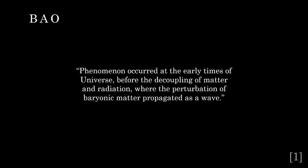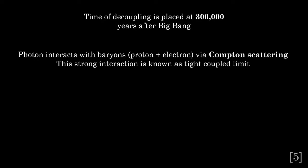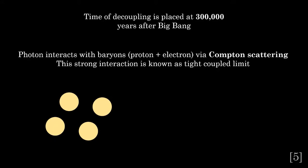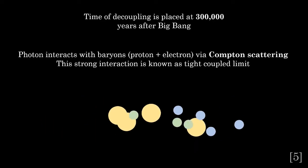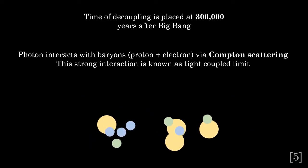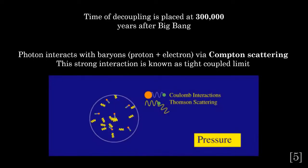Building some foundation on the perturbation, the Baryon Acoustic Oscillation, BAO from now, is a phenomenon that occurred at early times of the universe before the decoupling of matter and radiation, where the perturbation of baryonic matter propagated as waves. The time of decoupling is placed at 300,000 years after the Big Bang. Before that, the universe's temperature was very high, making the photons very energetic. Photons interacted with the baryons, which in the cosmological context refers not only to protons but also electrons, via Compton scattering. This strong interaction is called the tight coupling limit.